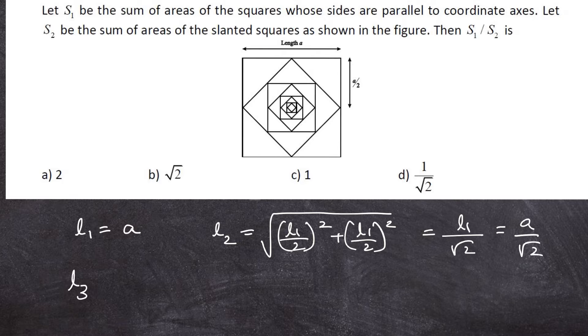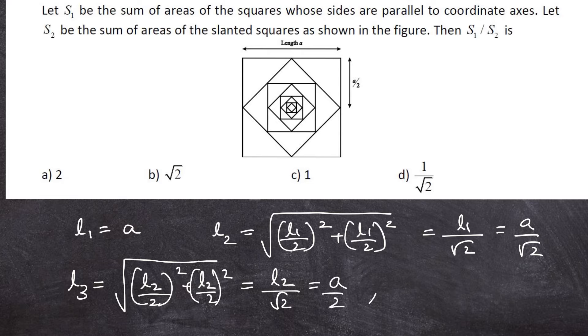Next square has side L3 that is root over L2 by 2 whole square plus L2 by 2 whole square. That is L2 by root 2. That is A by 2. And similarly, L4 is equal to A by 2 root 2.